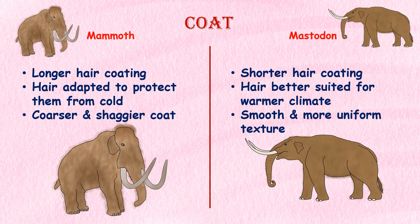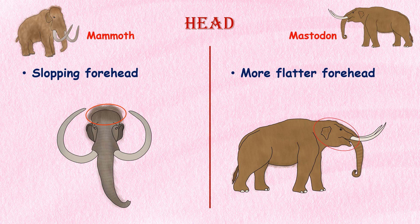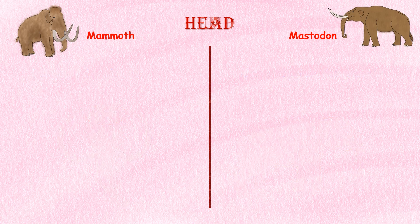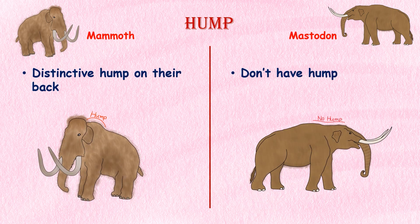The hair of Mastodons was smoother and more uniform in texture. Head. Mammoths and Mastodons had different head structures. One of the most noticeable differences is in their foreheads. Mammoths had a sloping forehead, while Mastodons had a flatter forehead with a bump in the middle. This difference is due to the shape of their skull bones. Hump. Mammoths also had a distinctive hump on their backs. The hump most likely worked like a camel hump, storing fat for hard times, where Mastodons didn't have this feature.